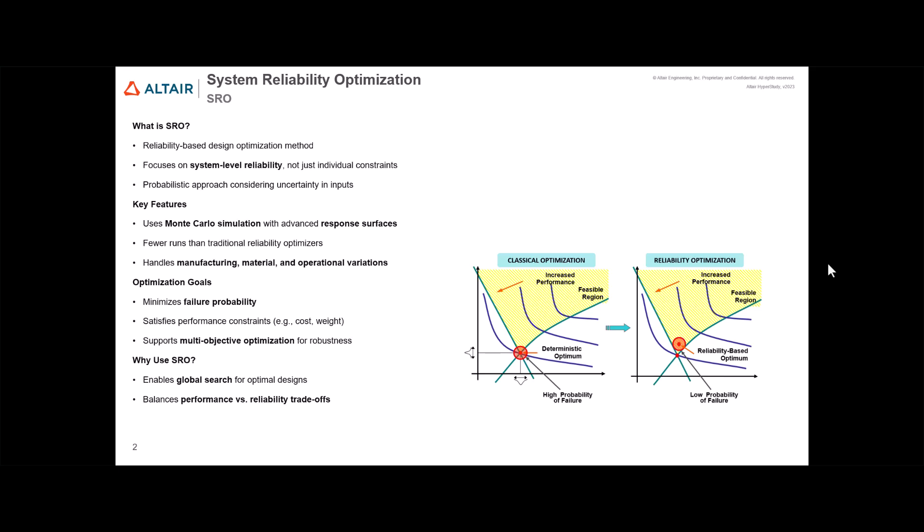It also adjusts design parameters to minimize failure probability while meeting cost, weight, and other performance constraints. SRO includes a global search capability and handles robust optimization as a multi-objective problem, to balance nominal performance with design variability and explore the trade-off between reliability and performance.